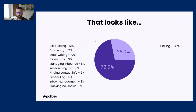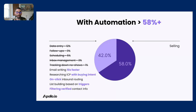McKinsey claims you can automate at least 30% of everything your sales team does. Looking at the typical day: about a third of your time goes into selling — sending emails, making calls, taking demos. The rest goes into things like list building, data entry, writing emails, internal meetings, and so on. If we automate 30% of what you do, you can now spend 58% of your time actually selling and building your pipeline.